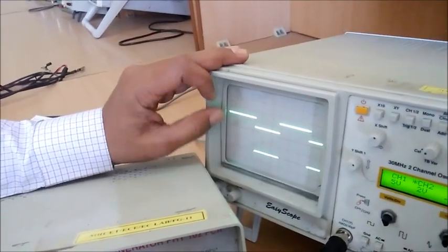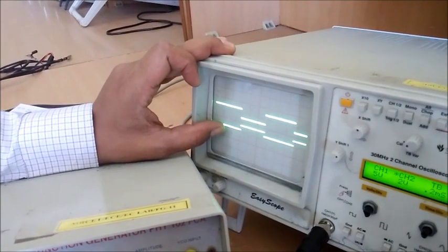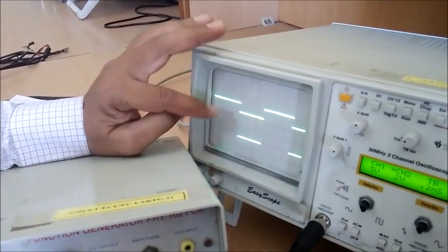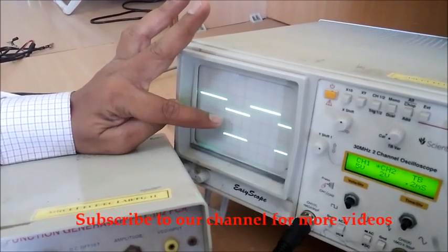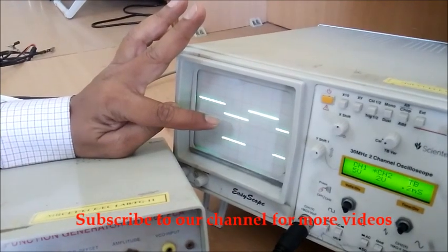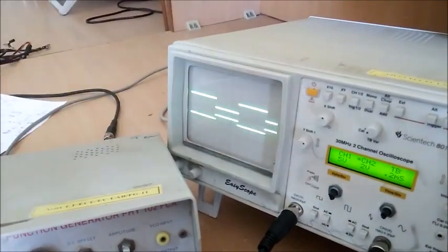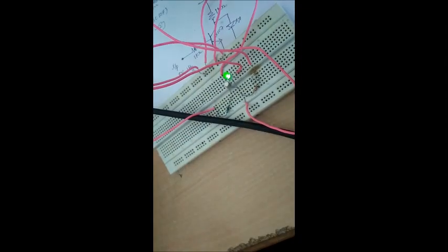Now observe the two waveforms - input and output. The output waveform varies between VCC saturation and plus VCC. One point can be observed from these waveforms: when the input is low, the output is high. This means the transistor shows a 180-degree phase shift from input to output. You can see the LED is in the on condition.